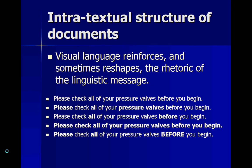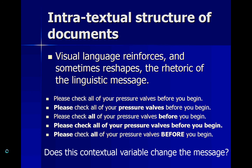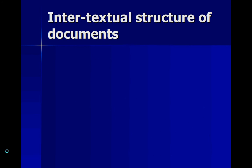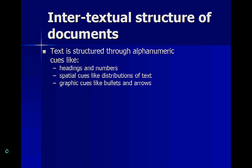This sample is directly from the text. Do you think this contextual variable changes the message, or not at all? Can you objectively say all of these phrases say the same thing, or does the focus really change your perception? There is also intertextual structure of documents — the one we're mostly familiar with. At this level, text is structured through alphanumeric cues like headings and numbers, spatial cues like distribution of text, and graphical cues like bullets and arrows.